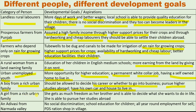Similarly, a girl from a rich urban family may think similarly to that boy. She wants as much freedom as her brother and to be able to decide what she wants to do in life, pursue her studies abroad — similar aspirations and goals.